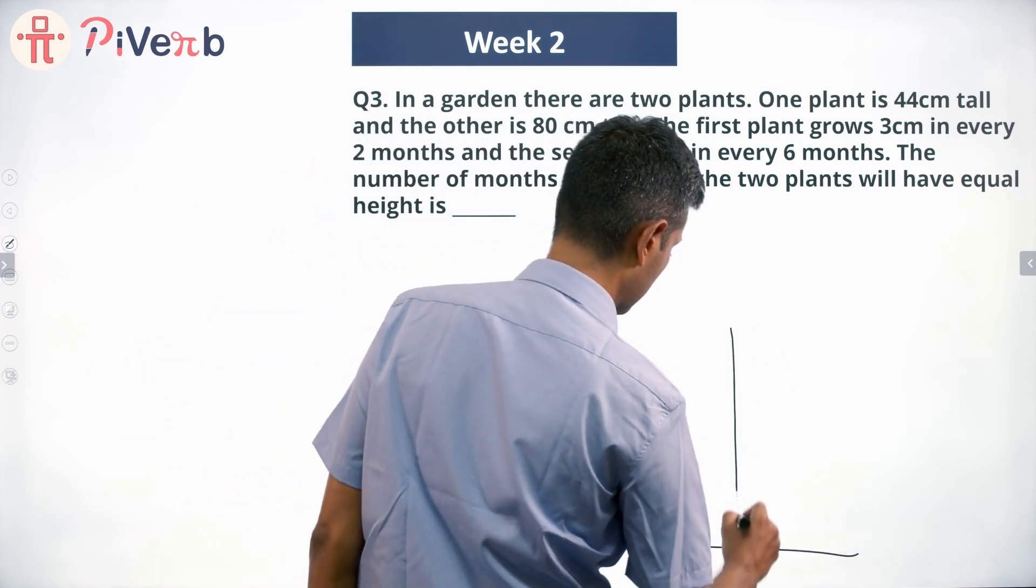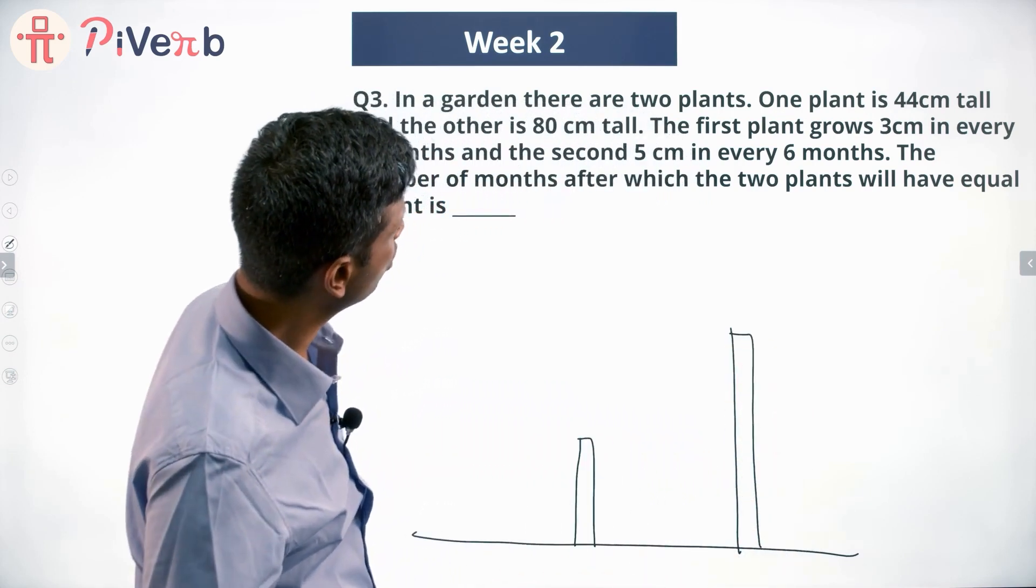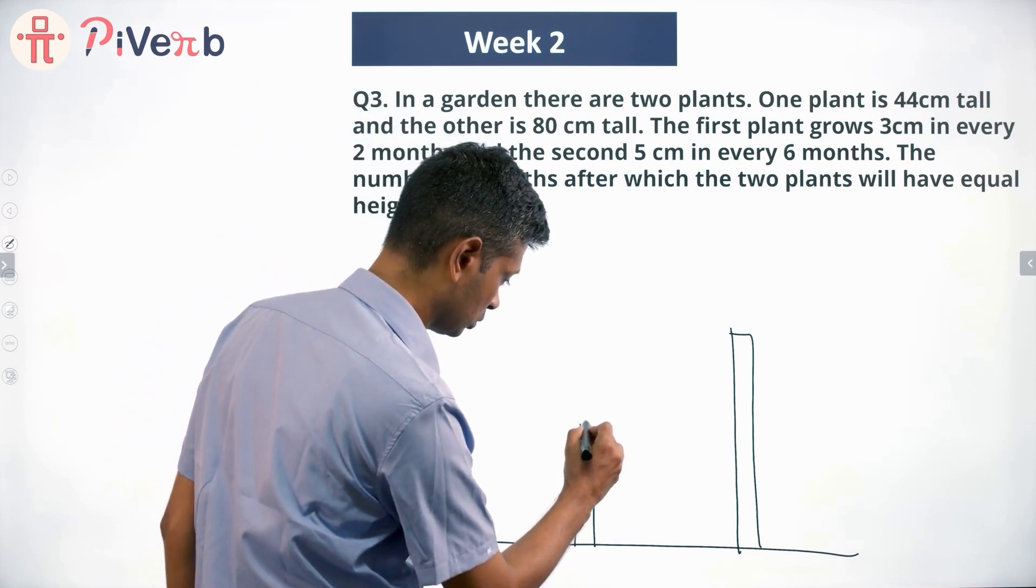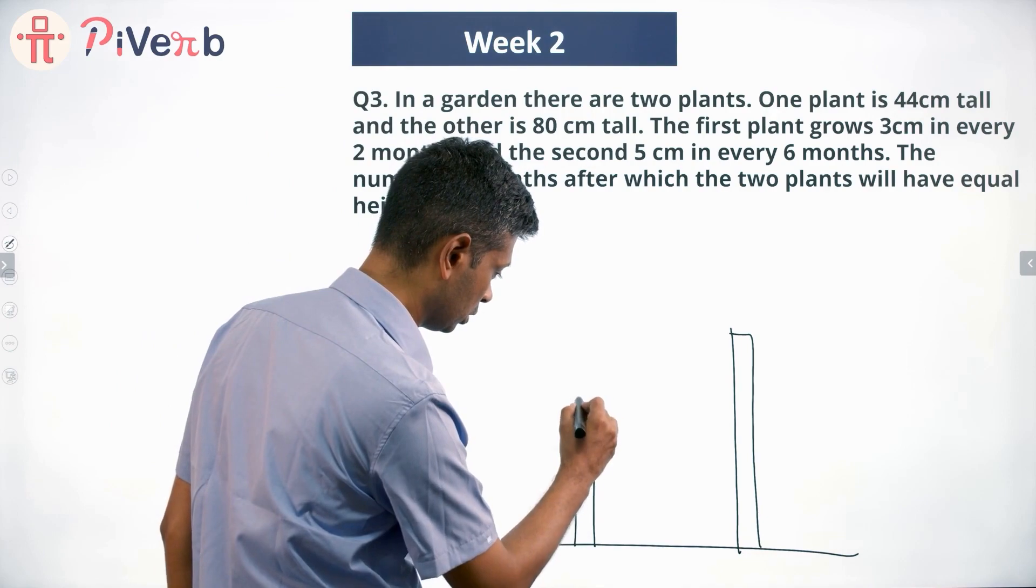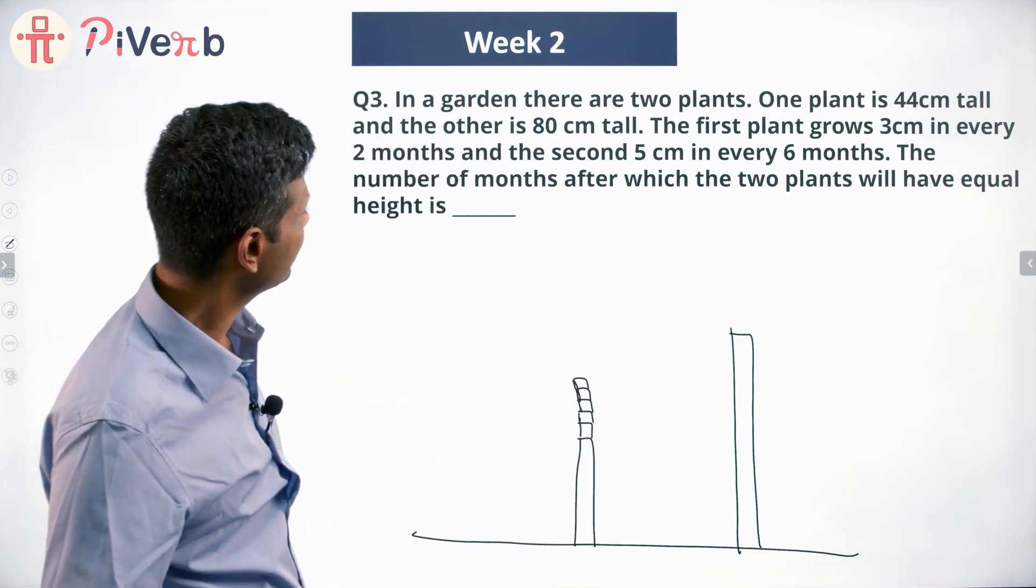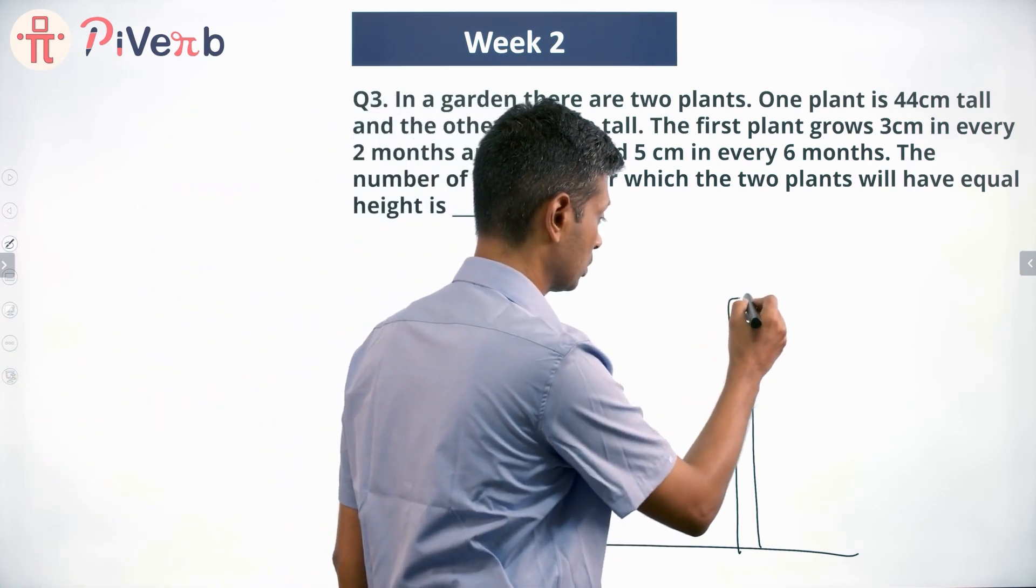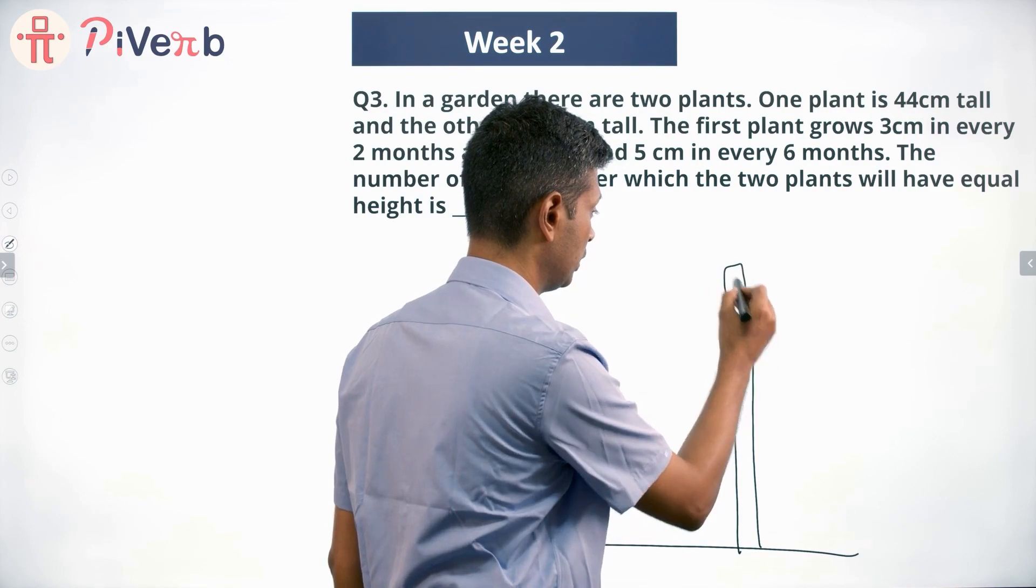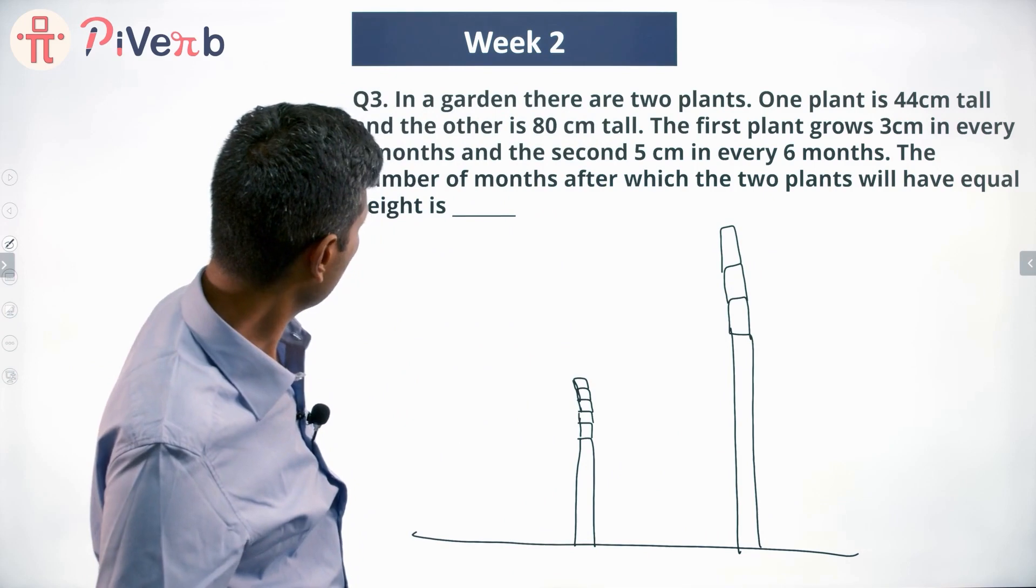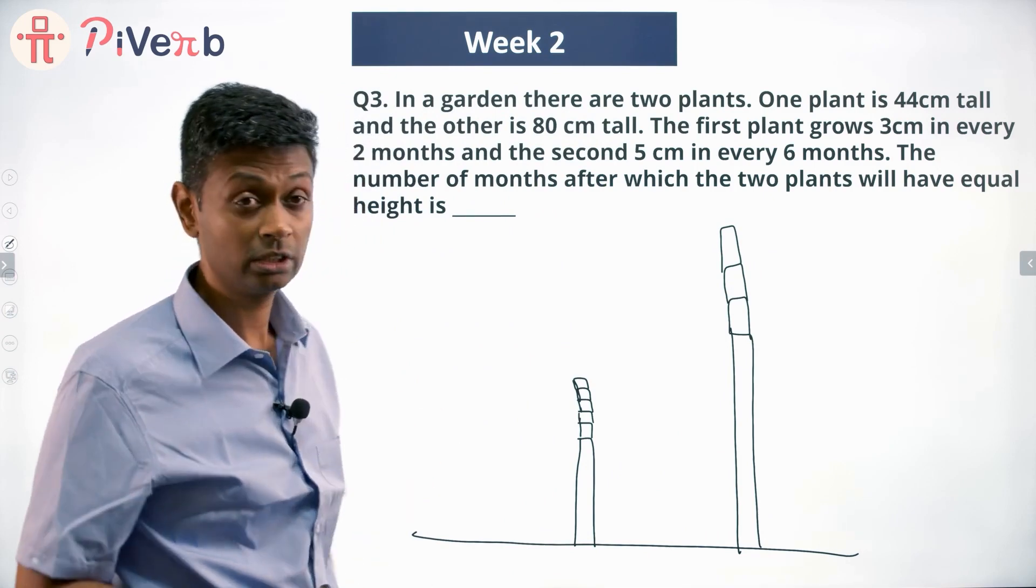The first plant grows 3 centimeters every 2 months, so 3, 3, 3, every 2 months it grows 3 centimeters. The second one grows 5 centimeters every 6 months. But every 6 months. The number of months after which the two plants will have equal height - when will they have equal height?